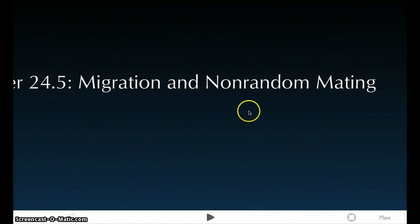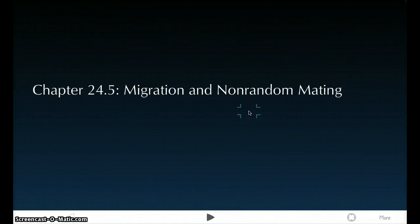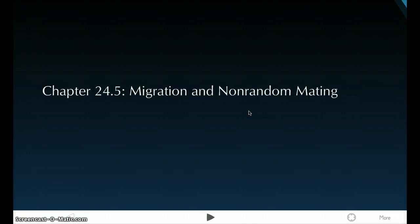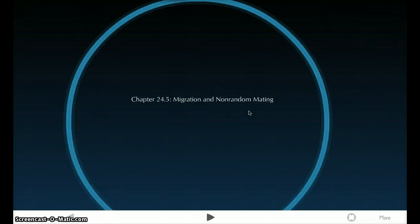My chapter is 24 and my lesson is 5, and I'm going to be talking about migration and non-random mating and how it affects genetic variation and relative proportions of genotypes in populations. We're going to start off by discussing migration.